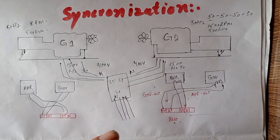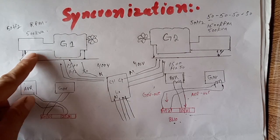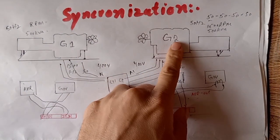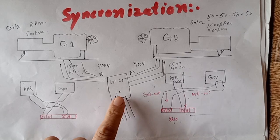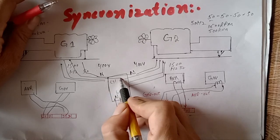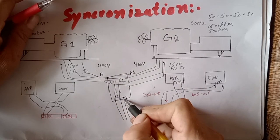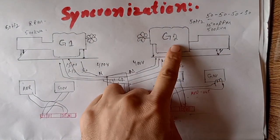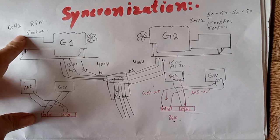This is the complete and proper synchronization of both generators. Both generators must be at 400 volts, 1500 RPM, and 50 Hz frequency. You can easily match the load of both generators. Connect neutral to neutral, L1 to L1, L2 to L2, L3 to L3, and neutral to neutral. The alternator connection must be the same — three phases and one neutral wire for each generator.